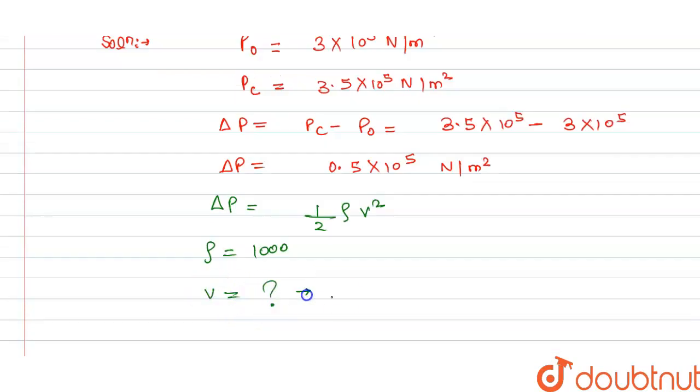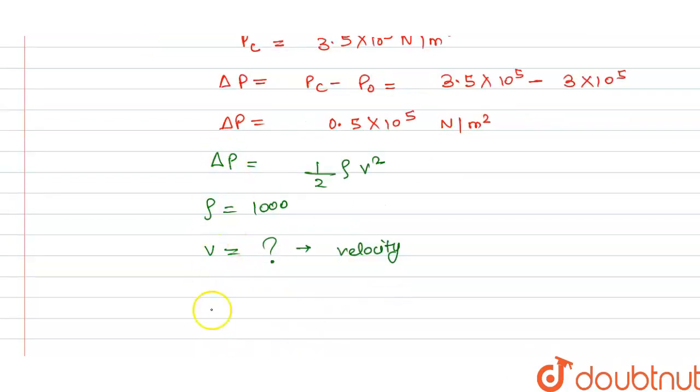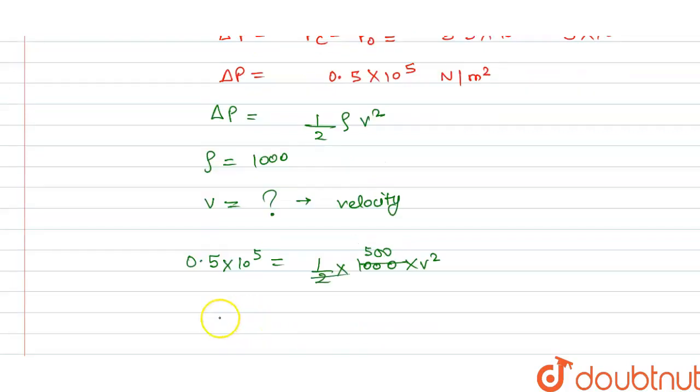If we put all values, we get 0.5 × 10^5 = (1/2) × 1000 × v². This simplifies to 0.5 × 10^5 = 500 × v².